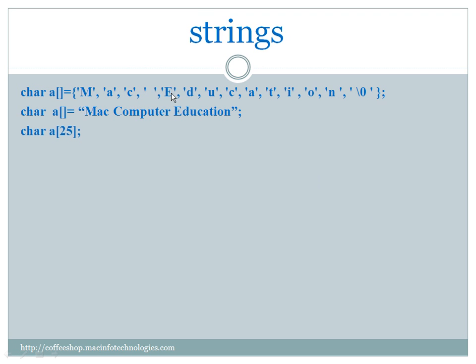We have also provided a space character in inverted commas, followed by a comma. We can give any character. We don't have to specify the size — it automatically takes the size from the initialization. You can see a character at the last that looks like two characters, but actually it is a single character.